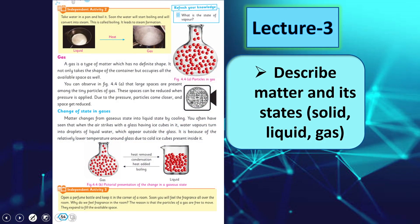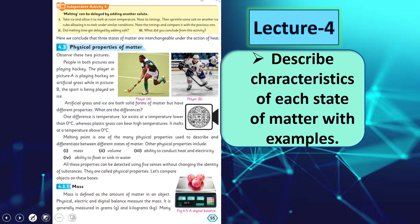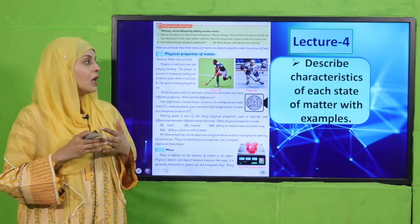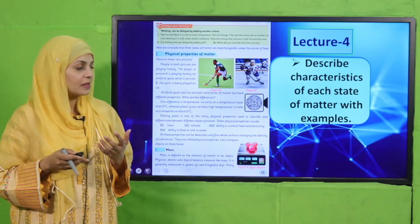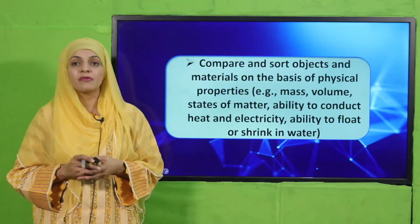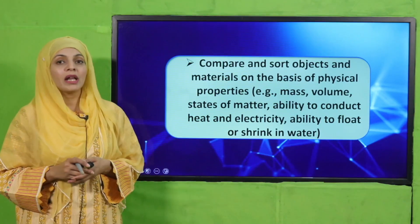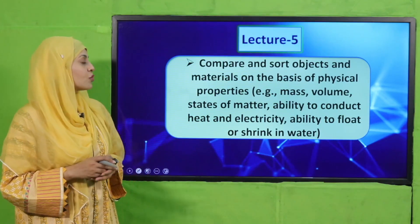In lecture number three, students will again be able to describe matter and its states — solid, liquid, and gas — and we will discuss them one by one. In lecture number four, students will be able to describe the characteristics of each state of matter with examples. The page included is page number 55.